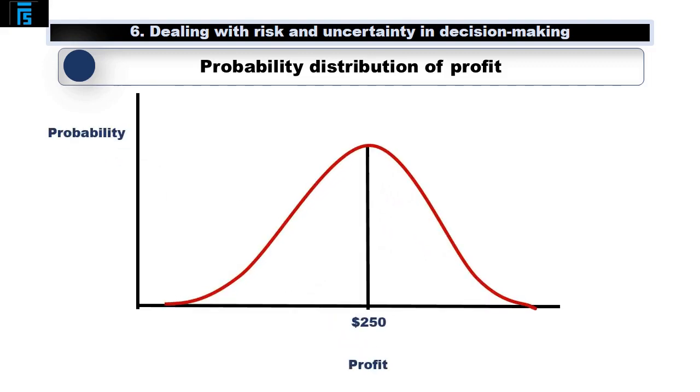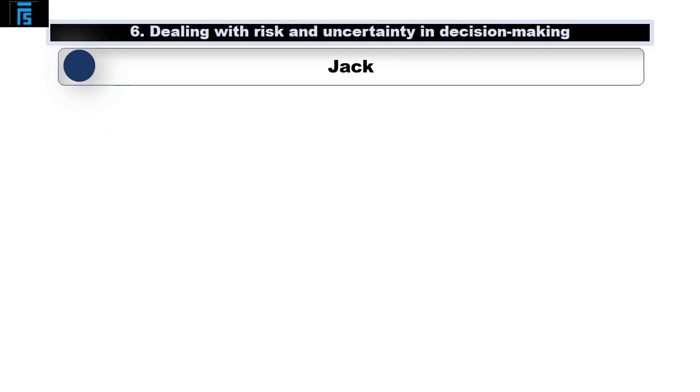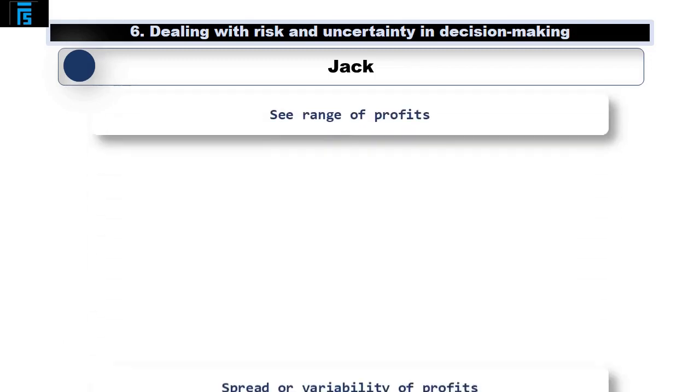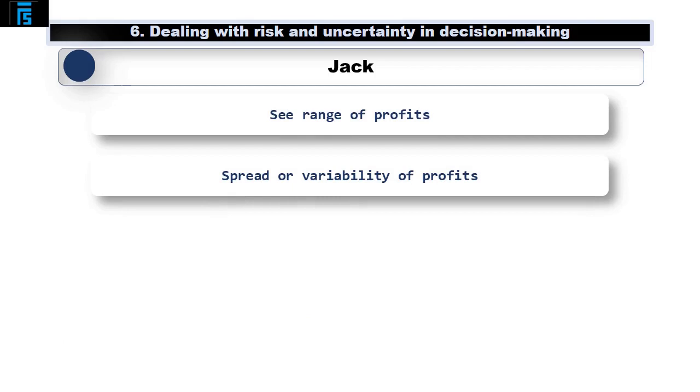It might look something like this. Jack can then see the range of profits he may achieve, and the spread, or how variable those profits may be.